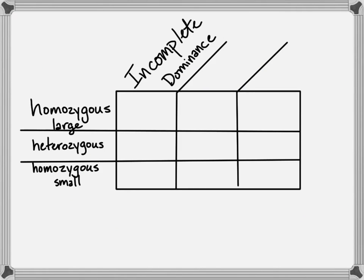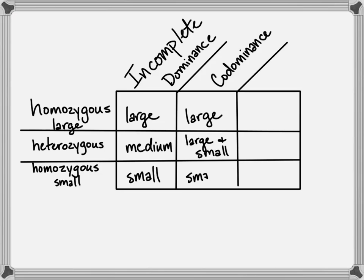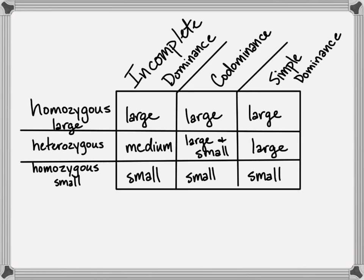So just to look at all these together: incomplete dominance is going to produce large, medium, and small. Codominance would have large, large-and-small, and small. Simple dominance and recessiveness would have large for homozygous large, large for heterozygous — there would be one dominant characteristic — and small for homozygous recessive. Those ratios are still going to be 1 to 2 to 1, and 25%, 50%, 25%. With simple dominant and recessive, you lump both large groups together, giving you 75% and 25% as your phenotype ratio. It's all about how that heterozygous individual expresses its genotype as a phenotype.